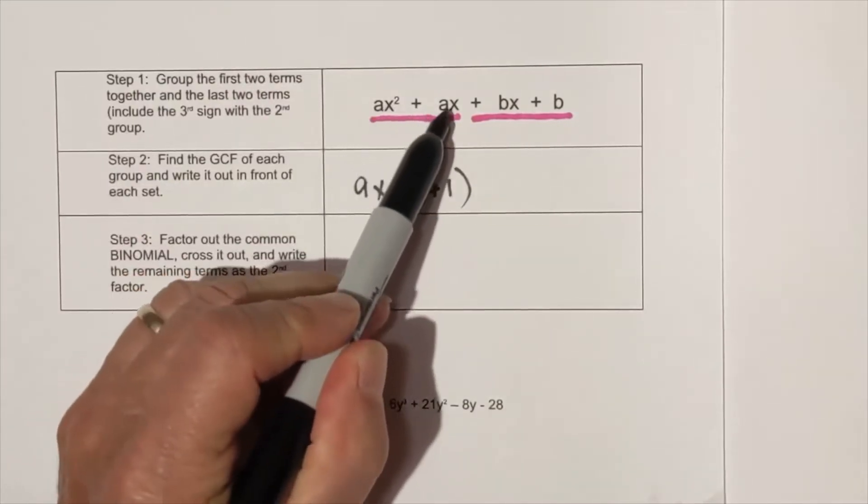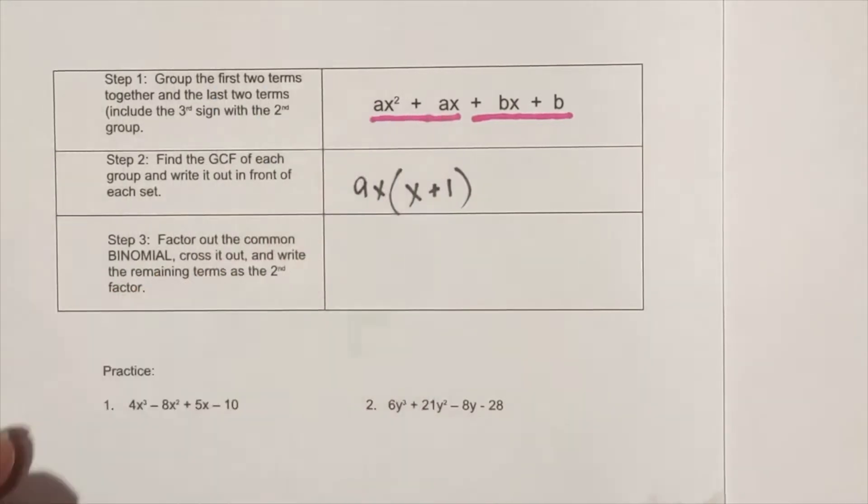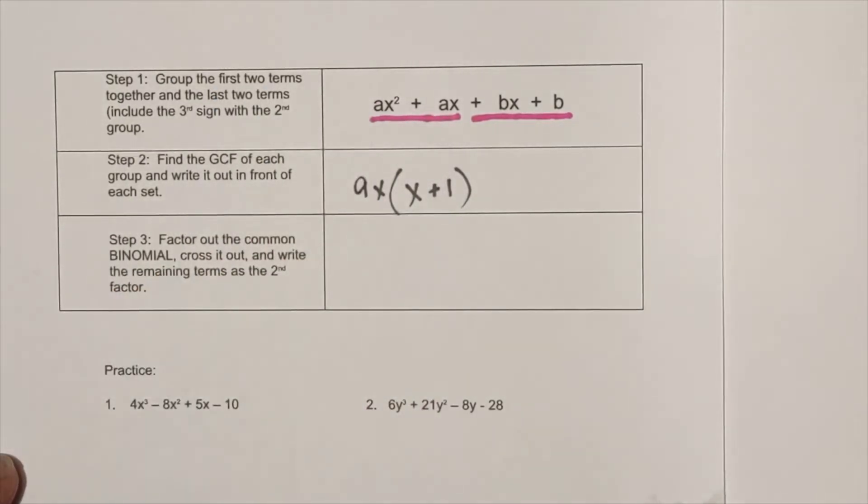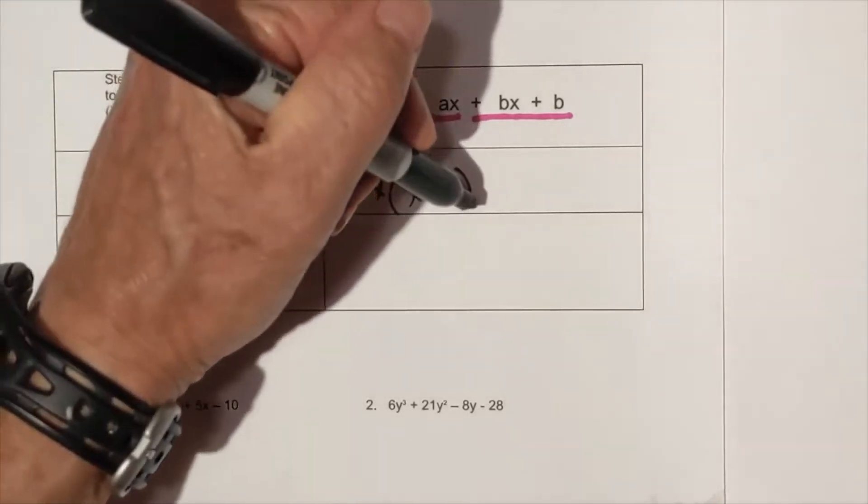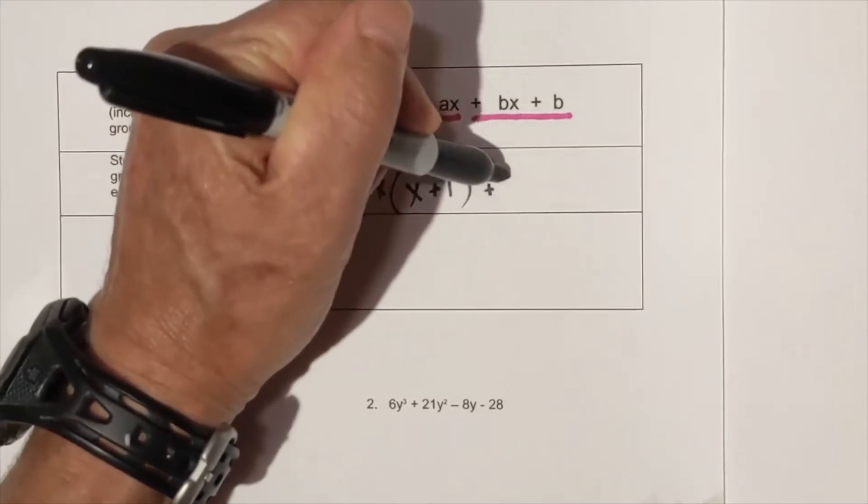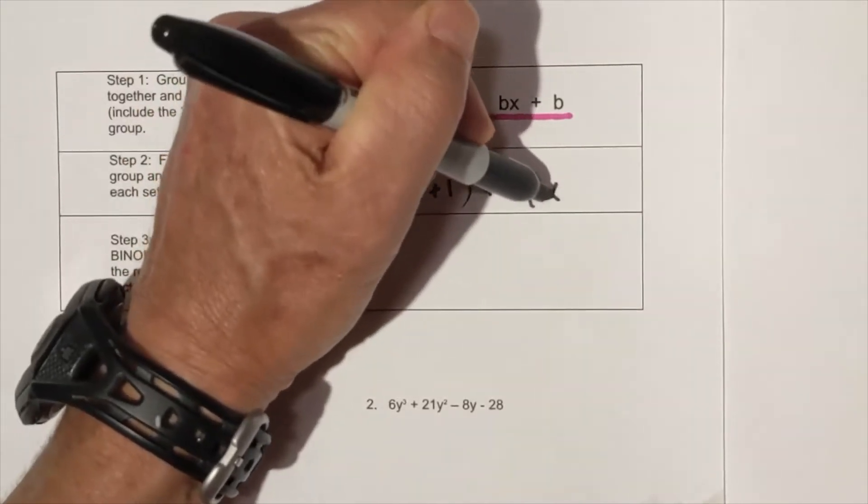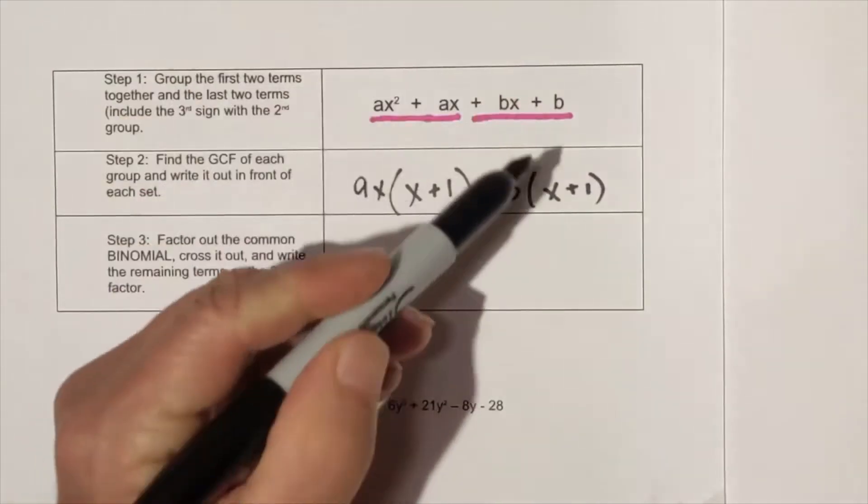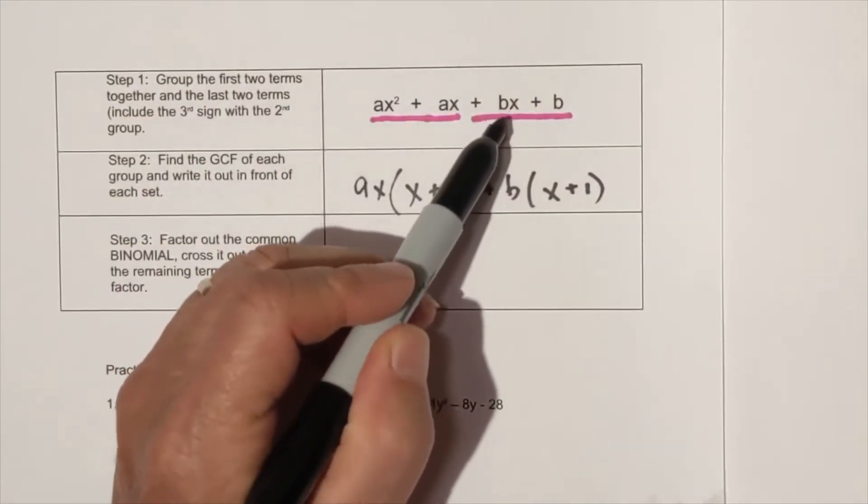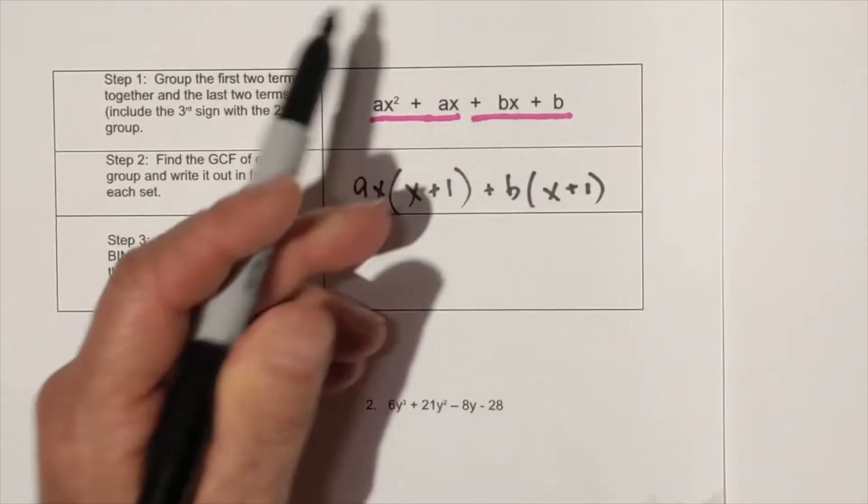Now what we do is, let's include the sign. For the next one we'll factor out b and we are left with x plus one, because when you factor out the b you're left with x and you're left with one because the b is removed.